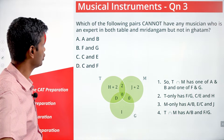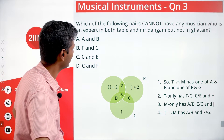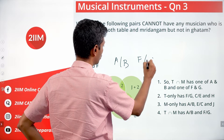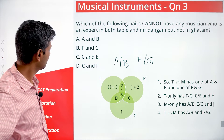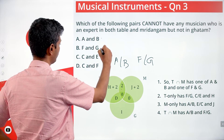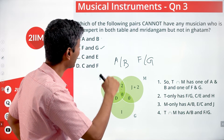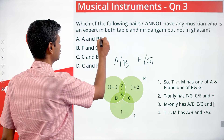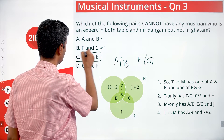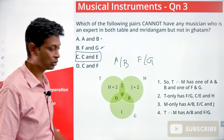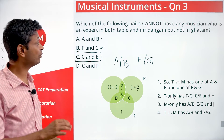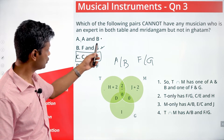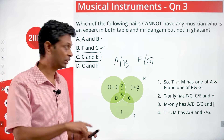Question: Which pair cannot have any musician who is an expert in both Tabla and Mridhangam but not Ghatam? That intersection holds one of A or B and one of F or G — so it could be A&G, B&F, A&F, or B&G. It cannot be A and B together, since only one of them sits here. C and E cannot be in this intersection at all — one of C or E goes in Tabla only, the other in Mridhangam only. So C and E is the answer.